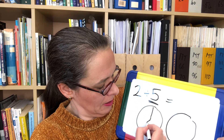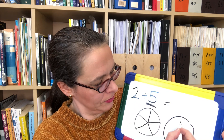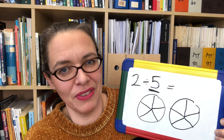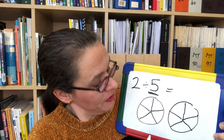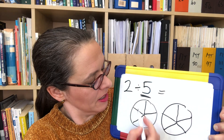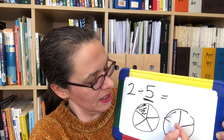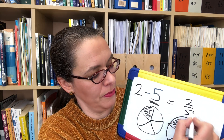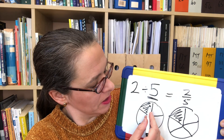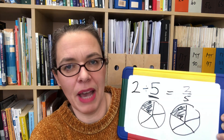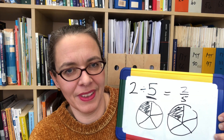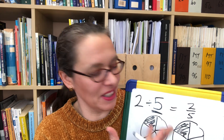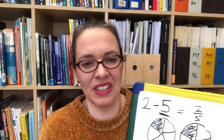If we cut these into fifths — the fifths aren't brilliant, but hopefully they're good enough to follow — each of your five people gets a slice from this one and a slice from this one, so the answer is 2 fifths. There's enough for each person to have a fifth from each pizza. It's much nicer, although the ultimate is for your children to wrestle with those other methods, come to the same conclusion, and link all those conclusions together.